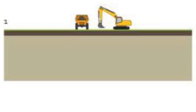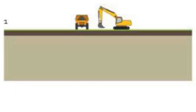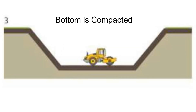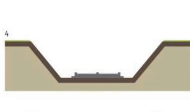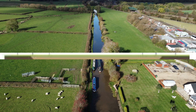In the bottom-up method, an excavation is made from the ground surface and the sides are supported. The tunnel is then constructed within this excavation, and may be of in-situ concrete, precast concrete, precast arches, or corrugated steel arches. The excavation is then backfilled and the surface reinstated. This method allows good access to the construction area, but surface reinstatement happens last, which in congested urban areas may be unacceptable.